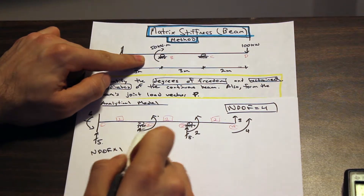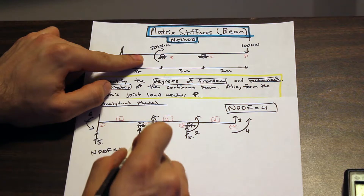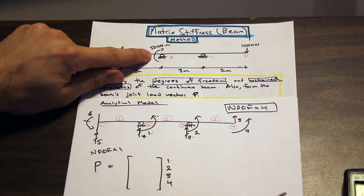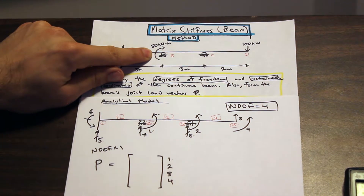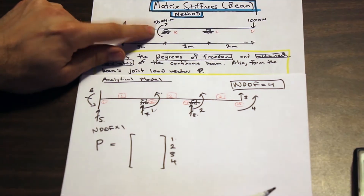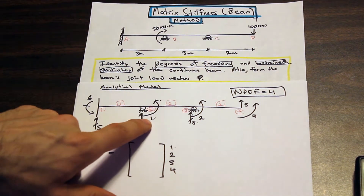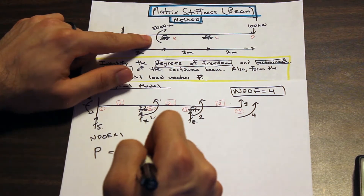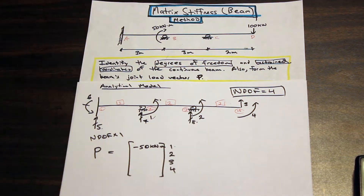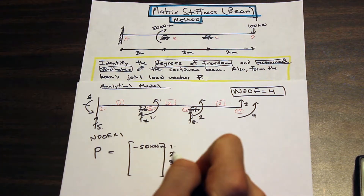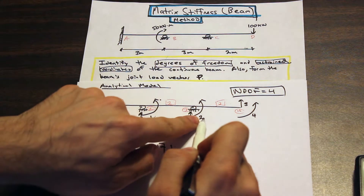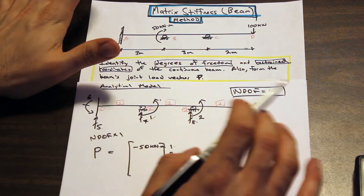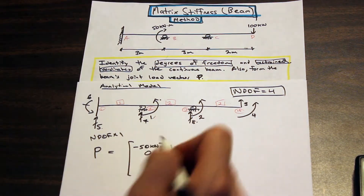Starting from degree of freedom one — looking at our analytical model and then up at the real model with loading — we do have an external moment of 50 kilonewton-meters. The 50 kilonewton-meters is in the opposite direction of what we've notated as positive, so it goes into P as negative 50 kilonewton-meters. For our second degree of freedom — a rotation at joint three — there is no external moment there, so that entry is simply zero.